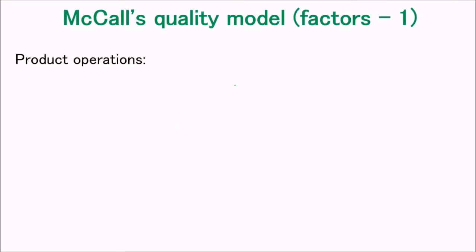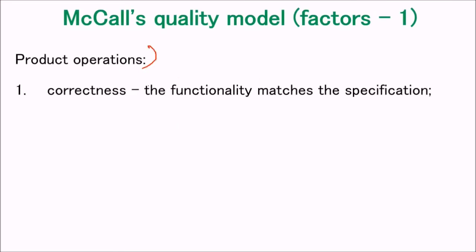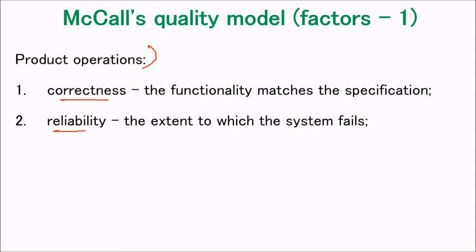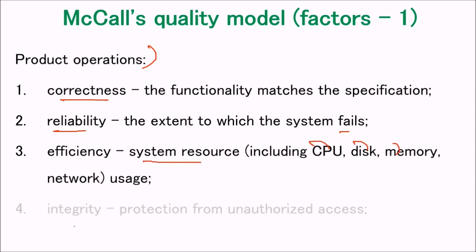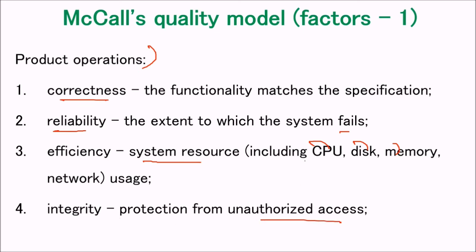For Factor 1 in McCall's quality model — product operation — correctness means the functionality matches the function specification provided by the user. Reliability means the extent to which the system works properly. Efficiency is the usage of system resources including CPU, disk, memory, or network. Integrity is protection from unauthorized access. Usability means easy to learn, easy to use, and pleasure in using.